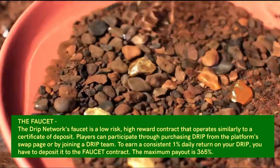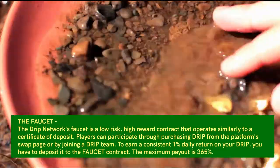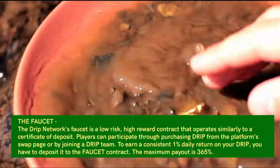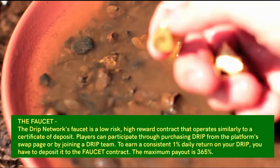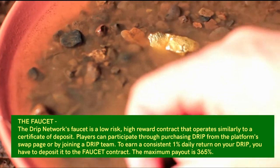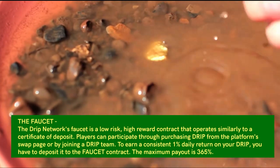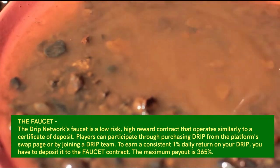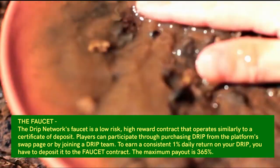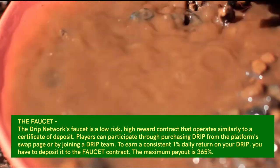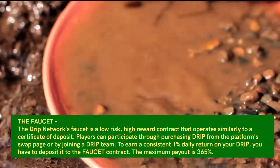The DRIP Network's faucet is a low risk, high reward contract that operates similarly to a certificate of deposit. Players can participate through purchasing DRIP from the platform's swap page or by joining a DRIP team, and to earn a consistent 1% daily return, you have to deposit DRIP into the faucet contract.